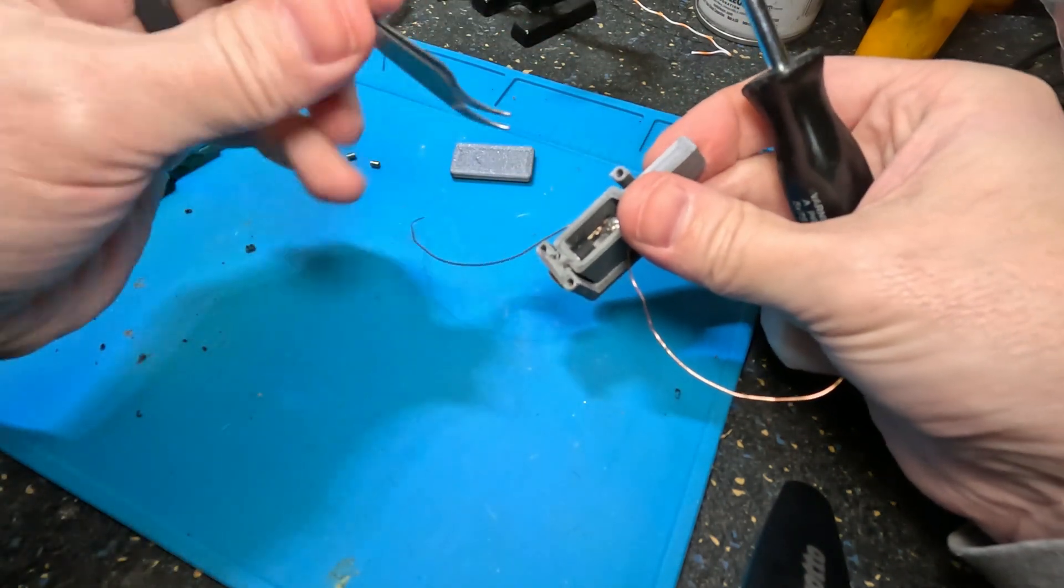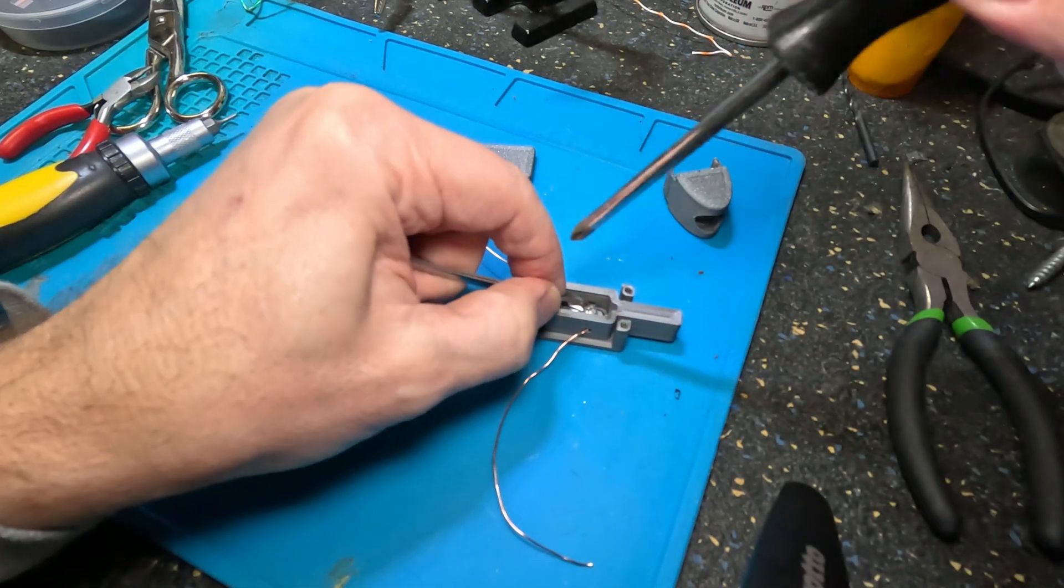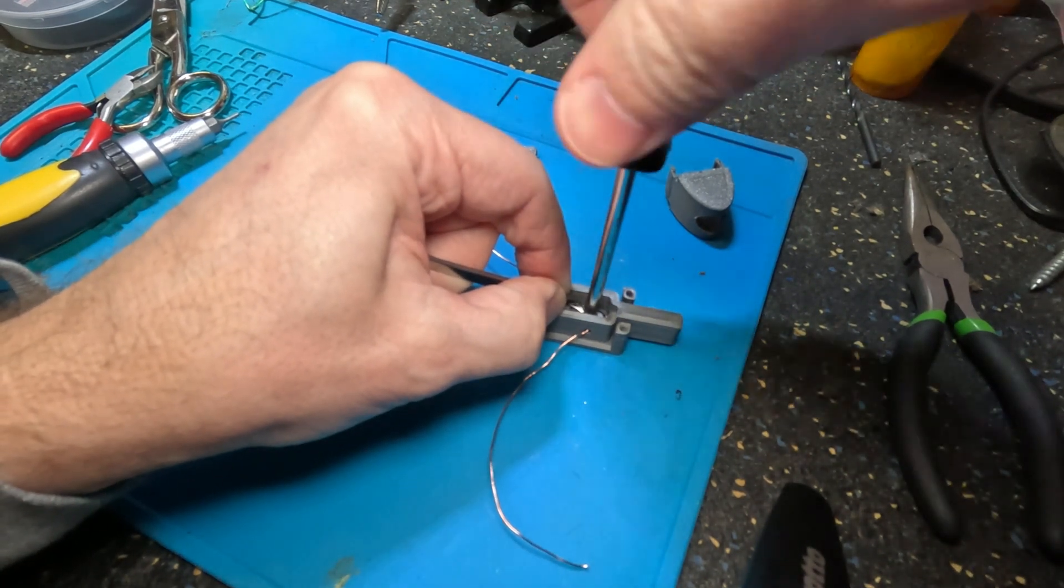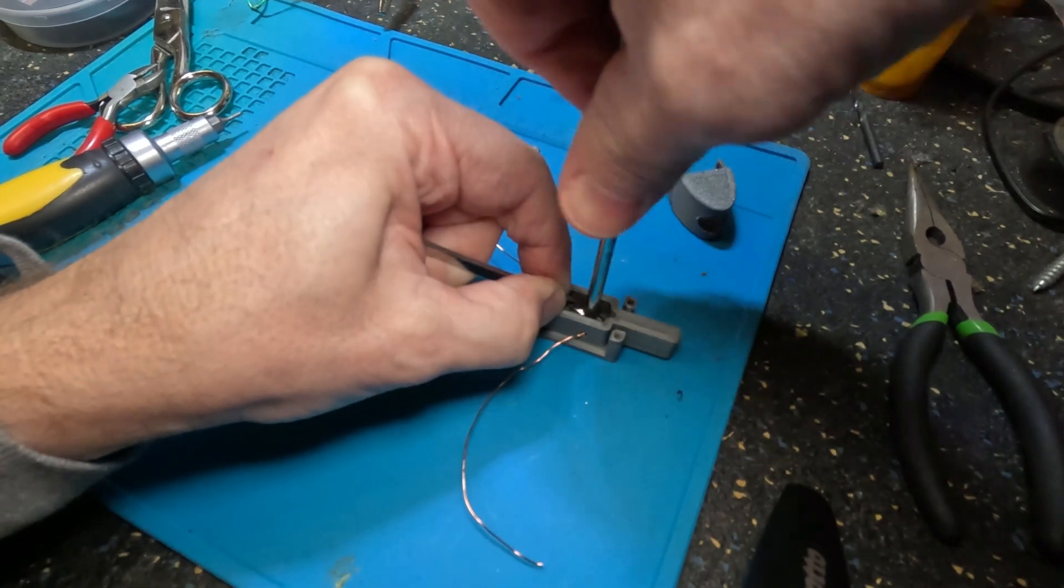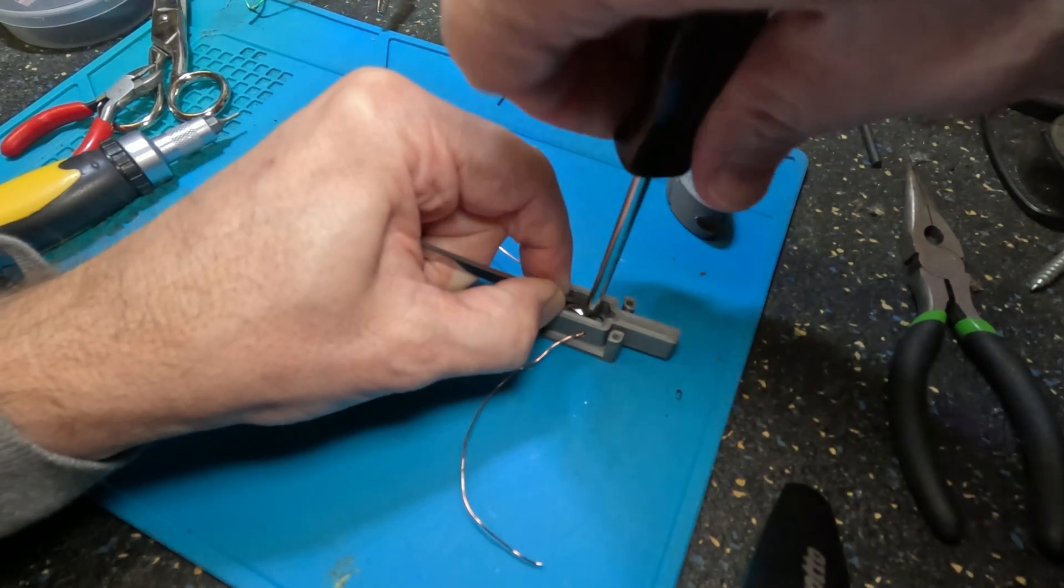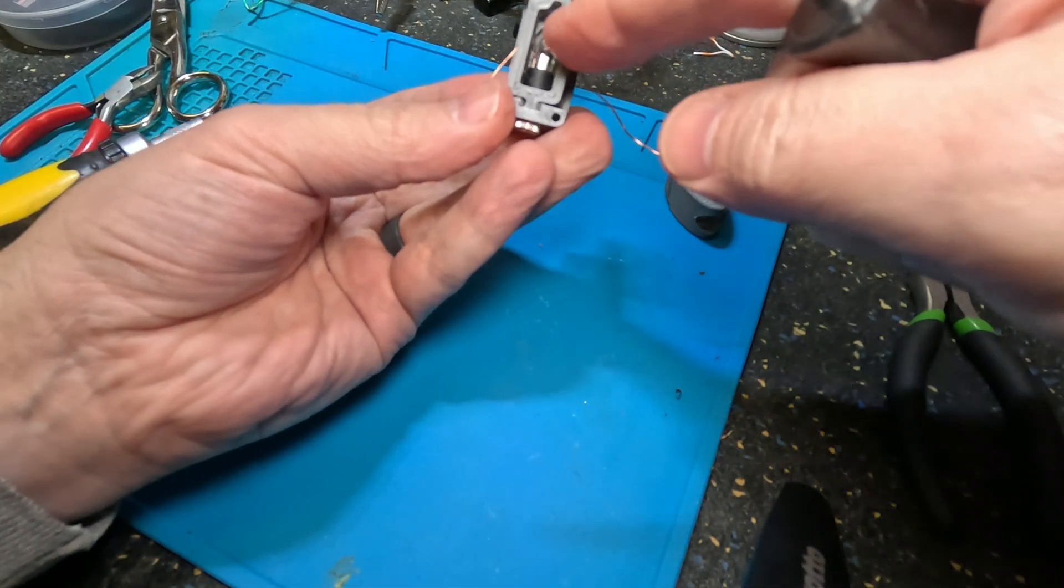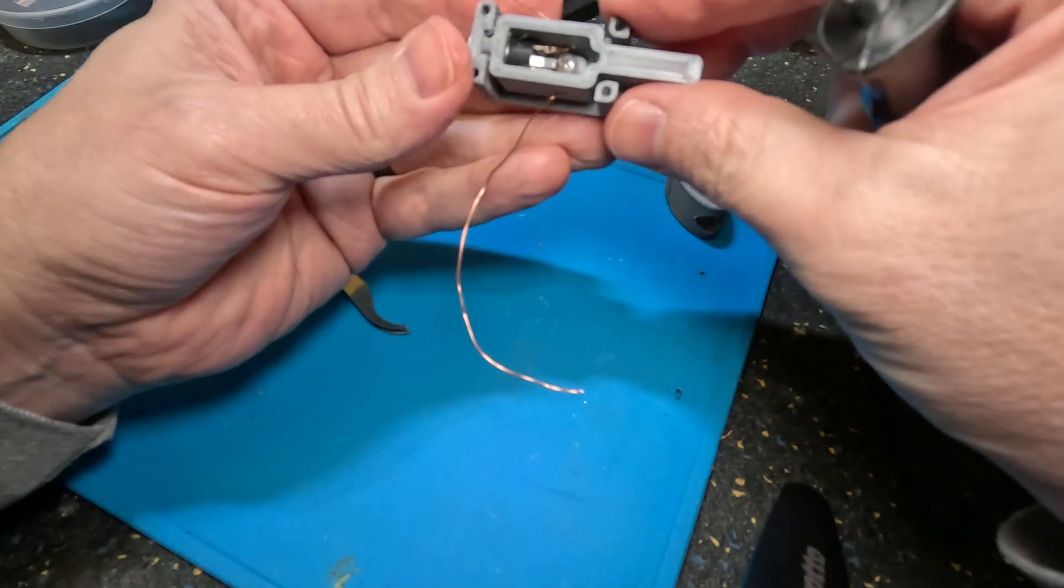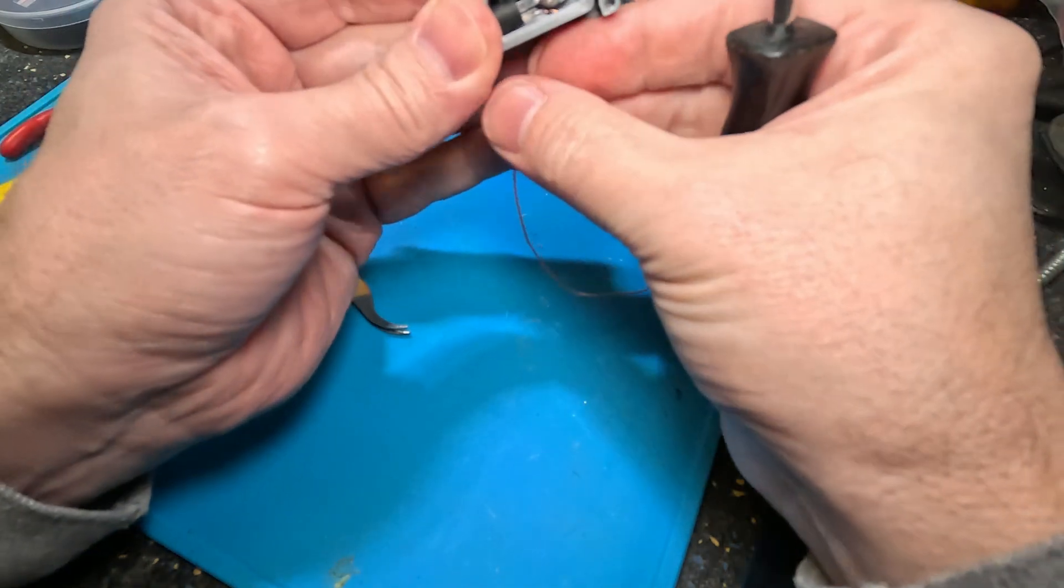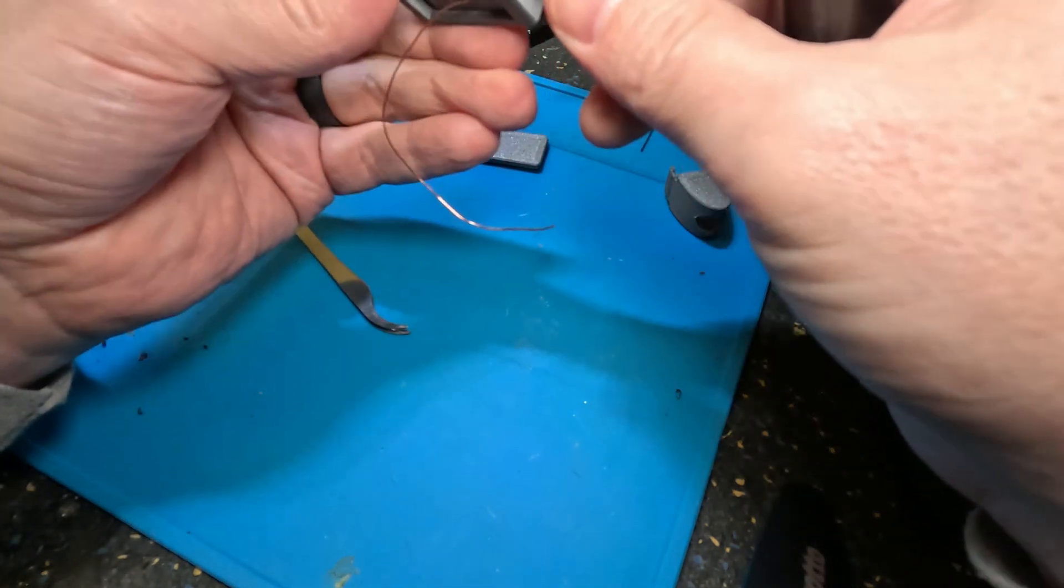I found that sticking something down there like a small screwdriver or something to kind of keep that pin centered helps when you're assembling it. So you can get this down tight. Okay so now that's pinched down into the bottom. As you can see when you move the paddle it's going to move. There'll be screws through these little holes. So yeah I think that's good.